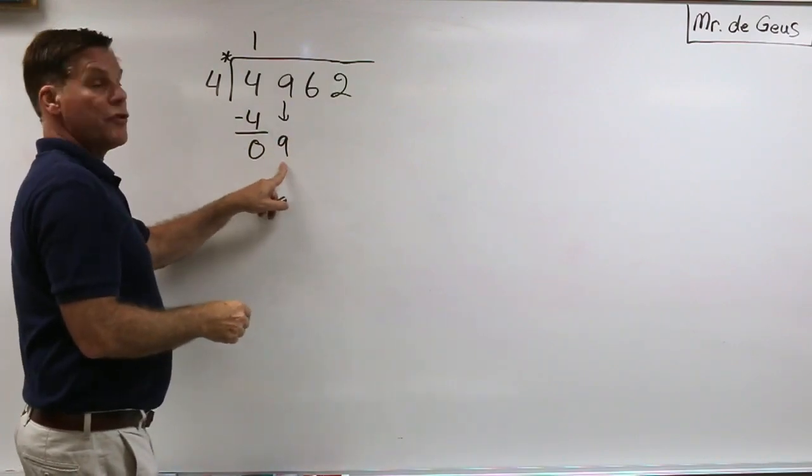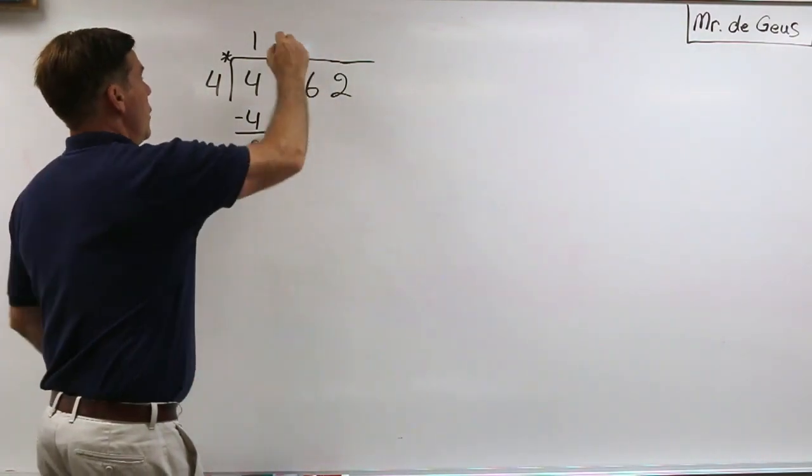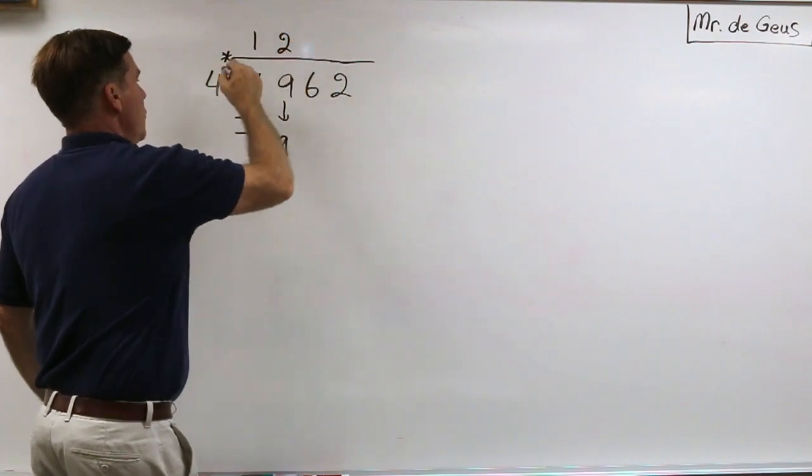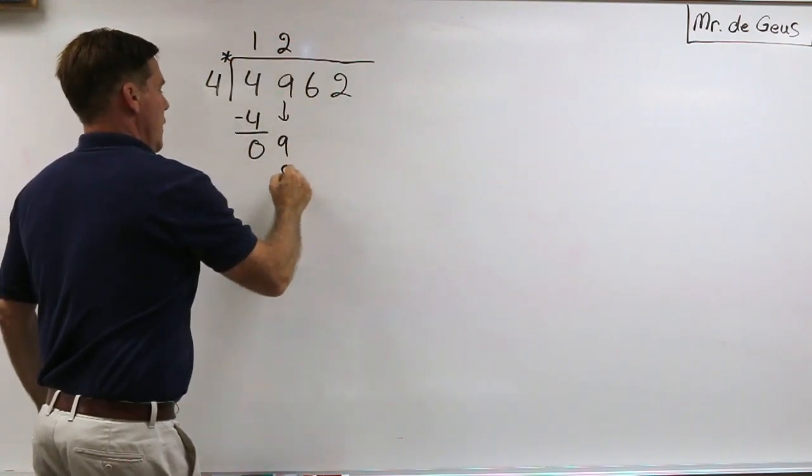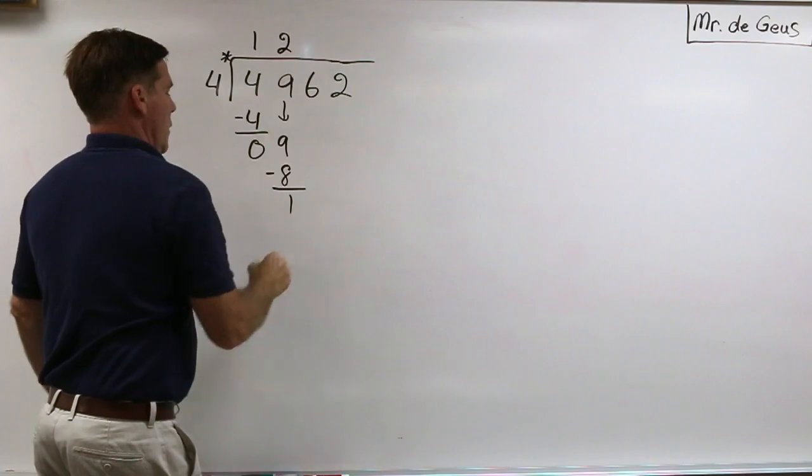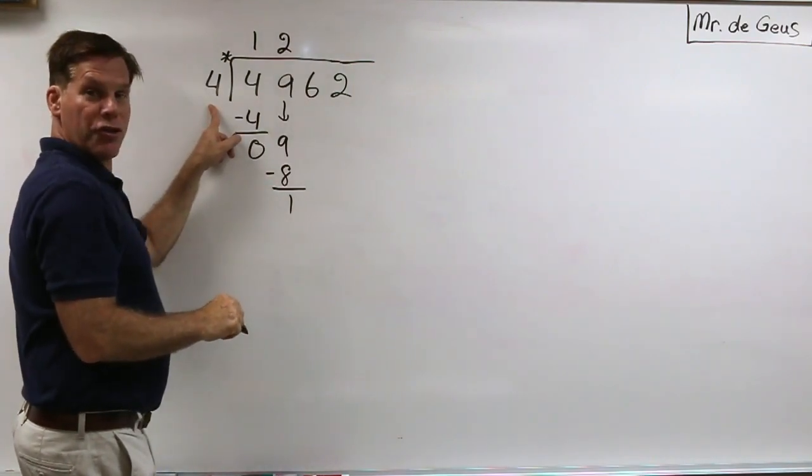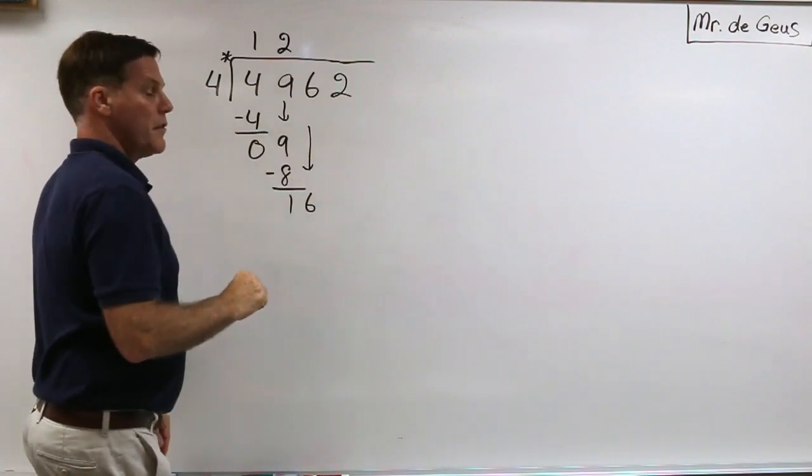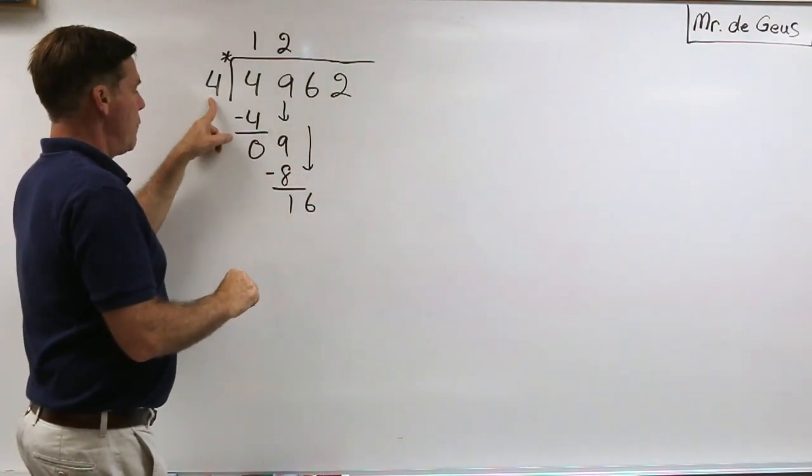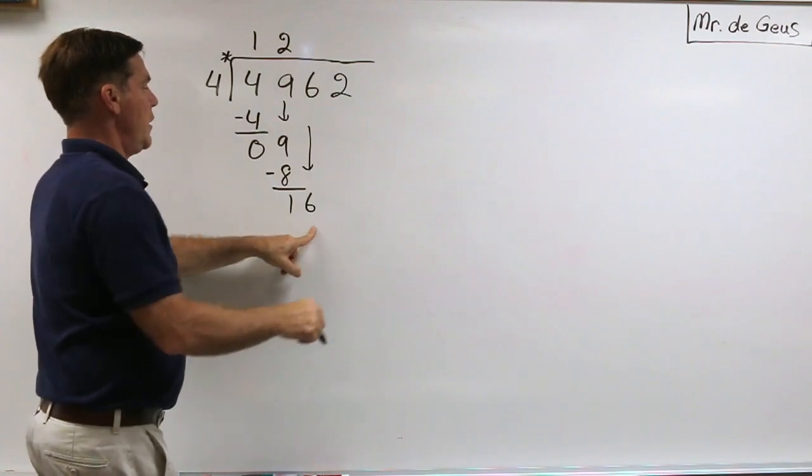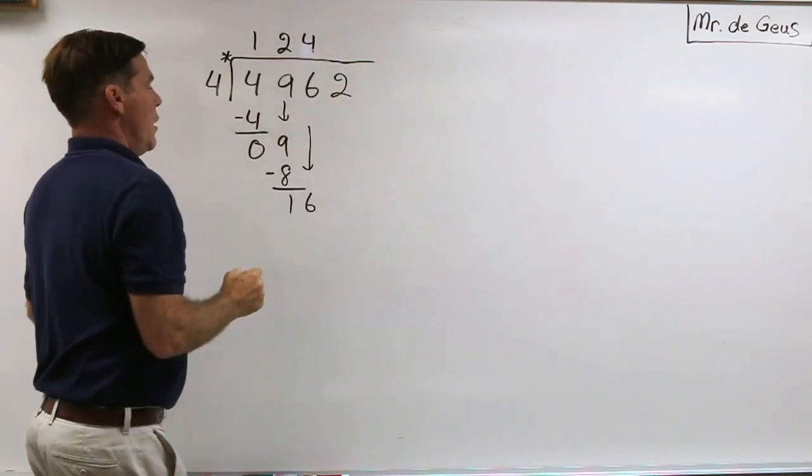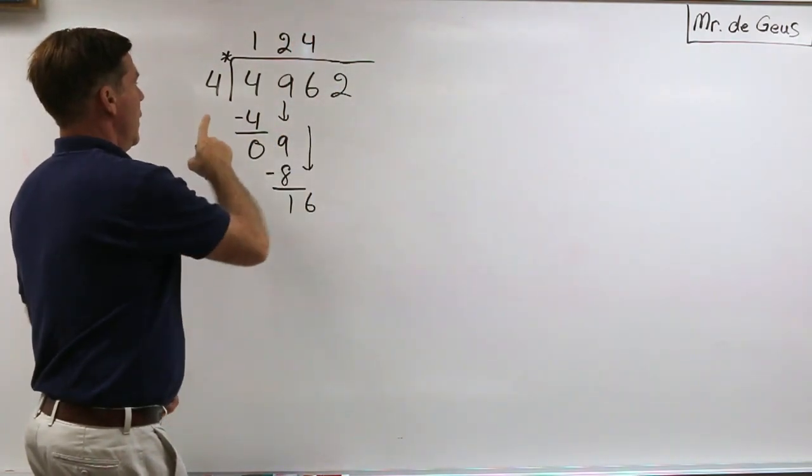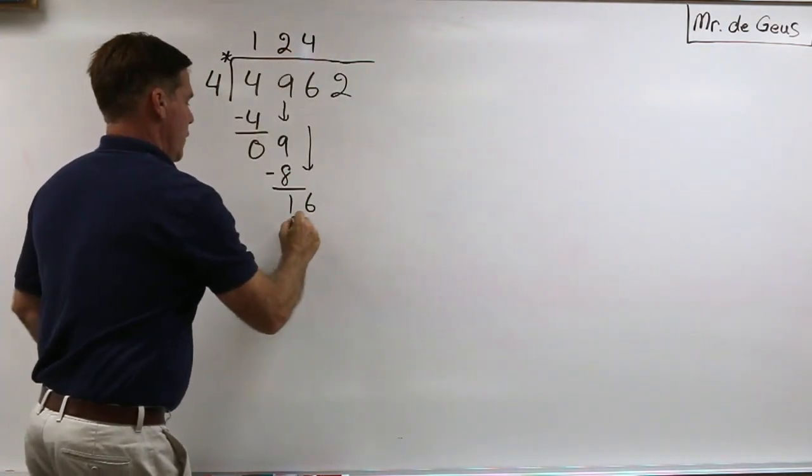4 goes into 9, I know it goes in there 2 whole times. 4 times 2 gives me an 8. 1 is less than 4, which shows me I'm doing a pretty good job. And I'm going to go ahead and bring down the 16. 4 goes into 16 four times. So 4 times 4 gives me 16.